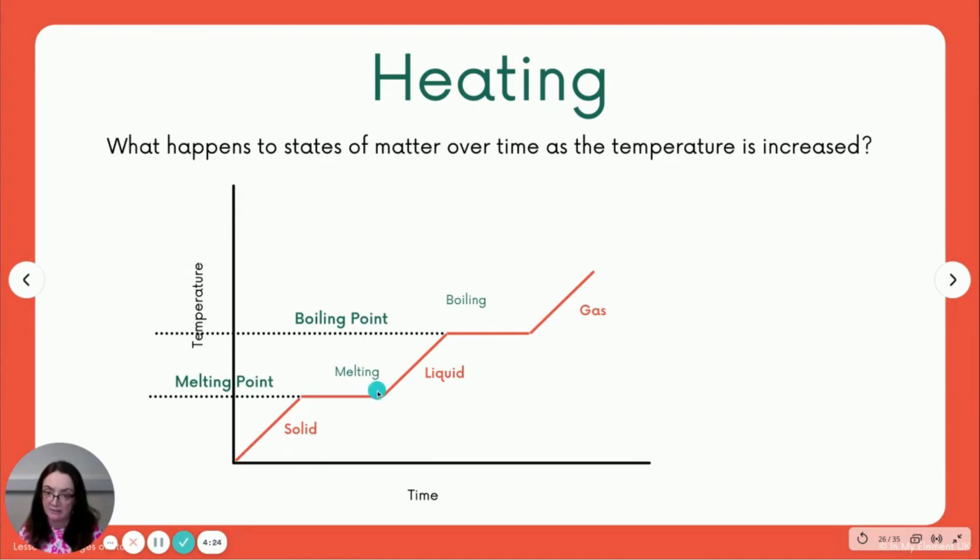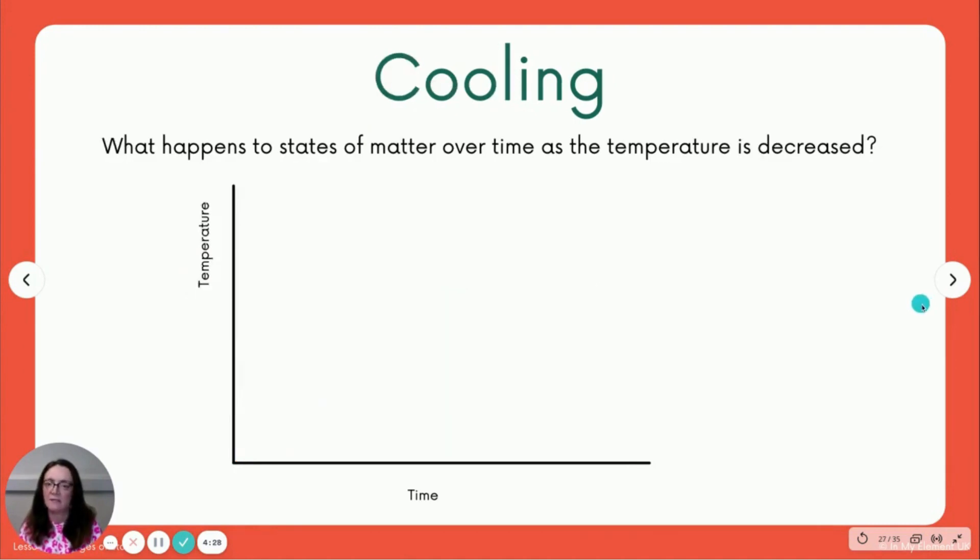The next graph is the cooling graph. So this time temperature is not being increased, temperature's being decreased. So we'll look at this. We're going to start, we've got our gas, we are going to reduce the temperature of our gas, we're going to become a liquid, going to reduce the temperature some more, and then we're going to become a solid.